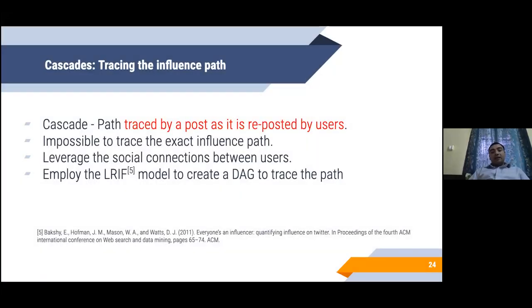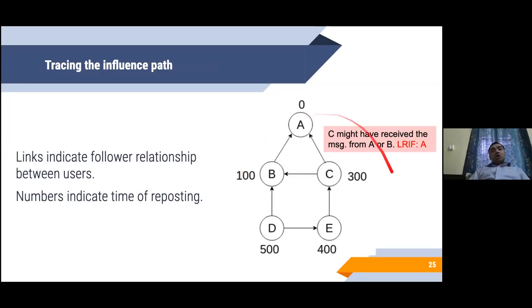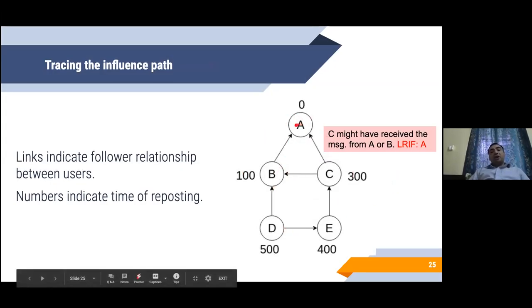Once we have done this, we try to study cascades or the influence path. A cascade is a path that is traced by a post as it is reposted by different users. It is usually difficult to trace the exact path of influence. We use a heuristic called the least recent influencer model to create a DAG to construct the trace of the path.